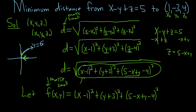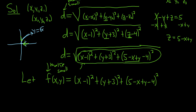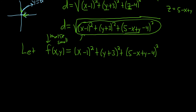To do that, we'll use the second partials test. First we'll compute both first partial derivatives and set them equal to zero. That will give us our critical point. So we give the inner expression a new name, little f, equal to x minus 1 squared plus y plus 3 squared plus 5 minus x plus y minus 4 squared.